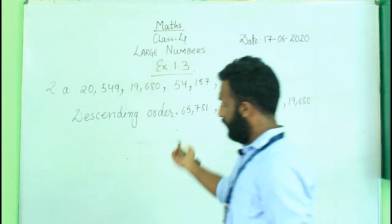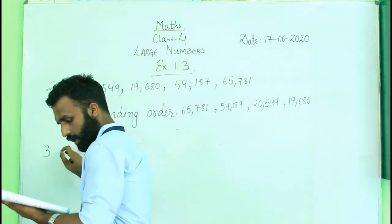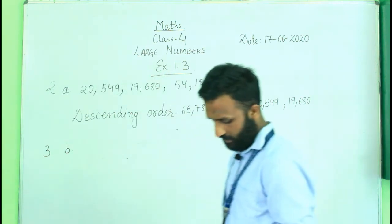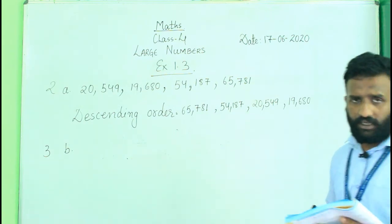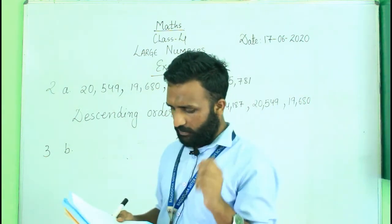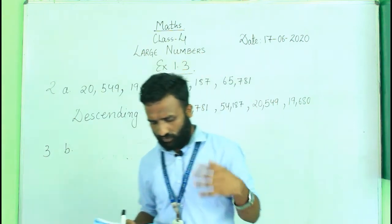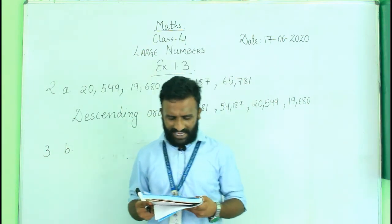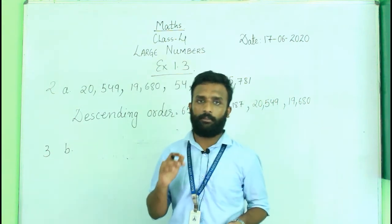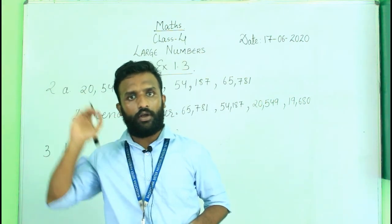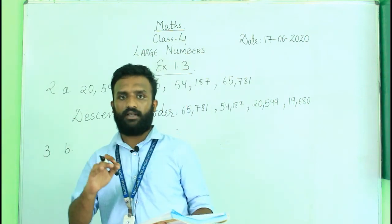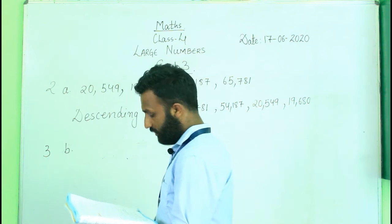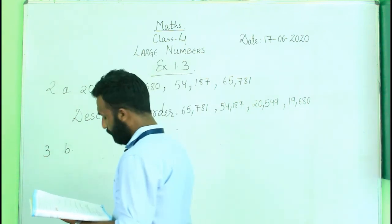Now let's go to question number 3. In question number 3, I will do sub-question B. The question says: write the following numbers in ascending order. Ascending order means writing numbers from small to big — from the smallest to the largest.